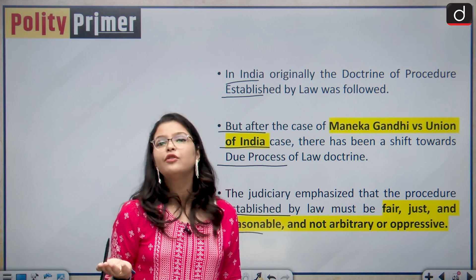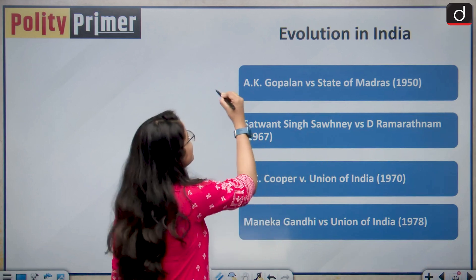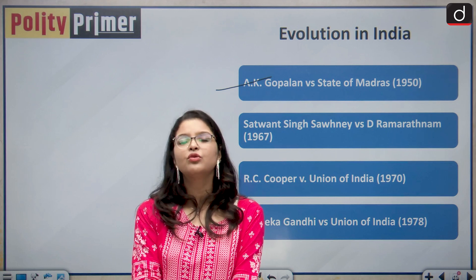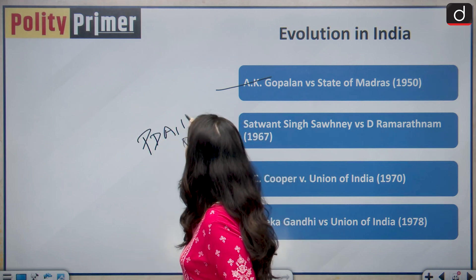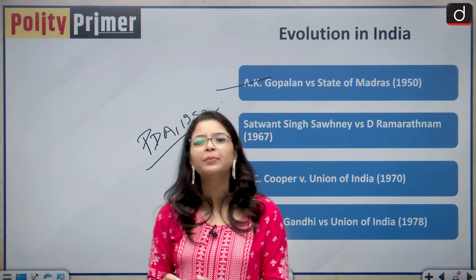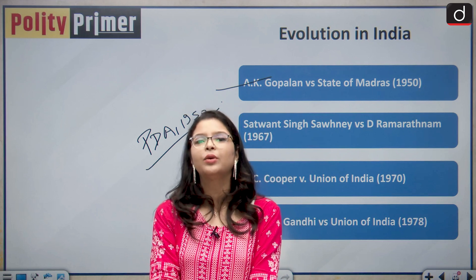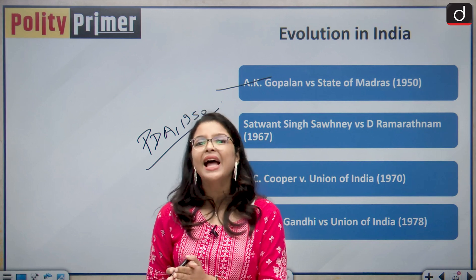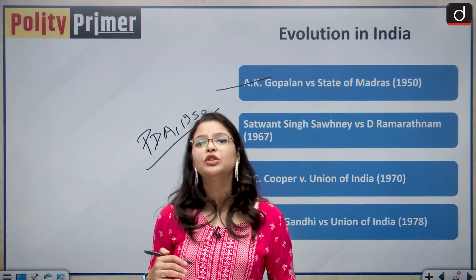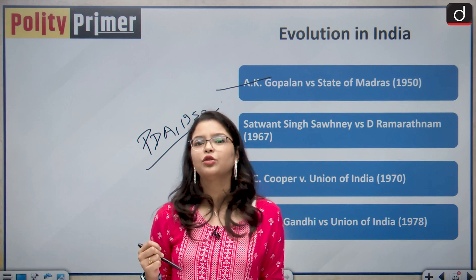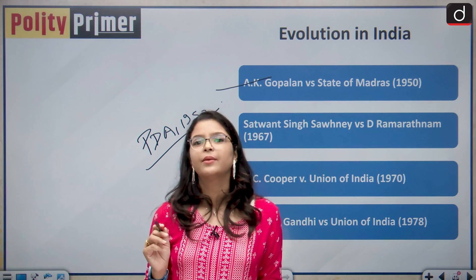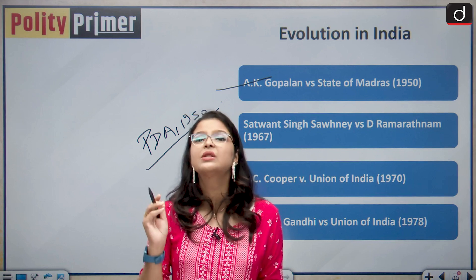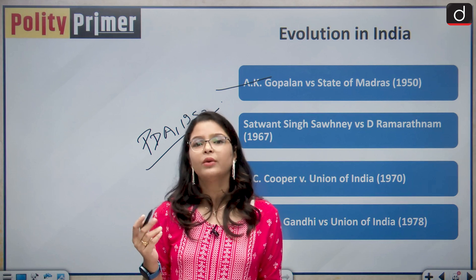The first important case in the evolution of these doctrines in India is A.K. Gopalan. A person was detained under the Preventive Detention Act of 1950 and filed a writ petition stating his detention was arbitrary and violated Article 21 without due process of law. The Supreme Court gave a very narrow interpretation to Article 21 and held that if the procedure established by law is strictly followed, the person can be deprived of his right to life and personal liberty.